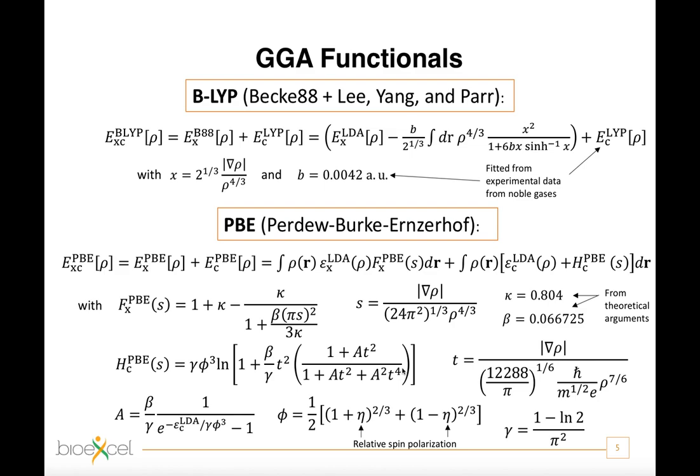The generalized gradient approximation significantly succeeds in reducing the effects of LDA overbinding, but it is still problematic in some contexts, for example the estimation of static properties like the atomization and dissociation energies, the bond lengths and the vibrational frequencies.